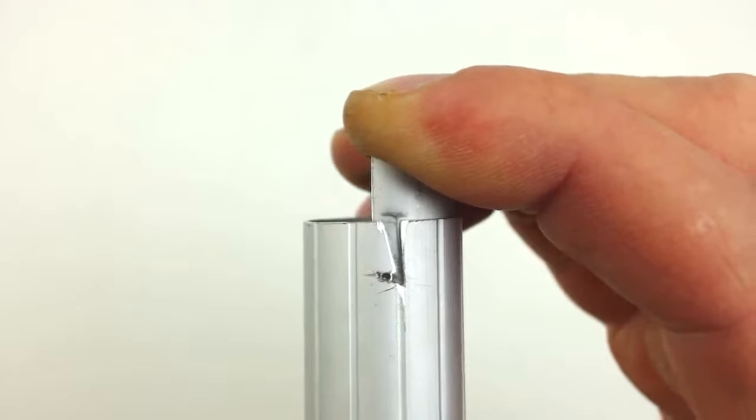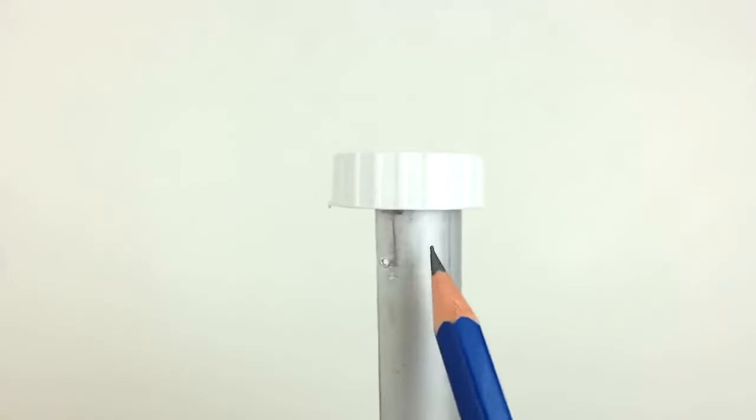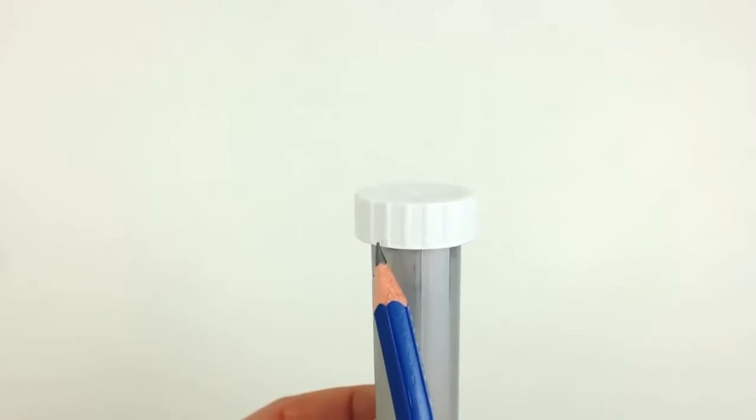Later, we will use this as part of the closure system. We put the cap back on as a reference because we need to make a small window at metal piece.